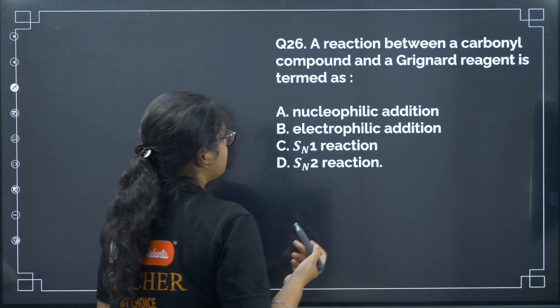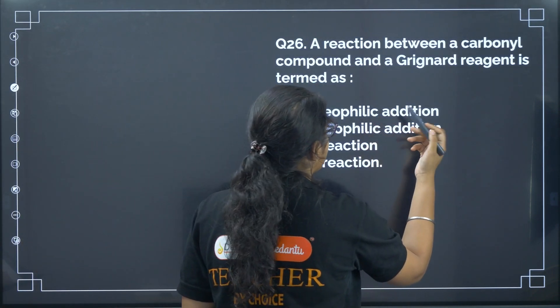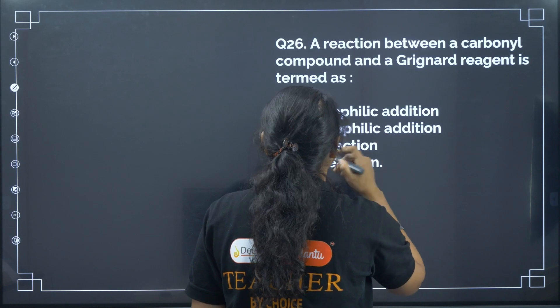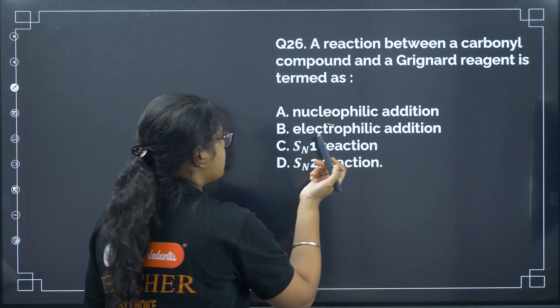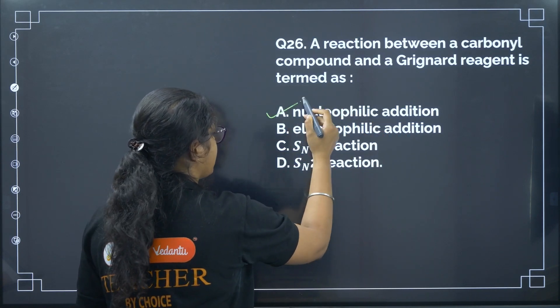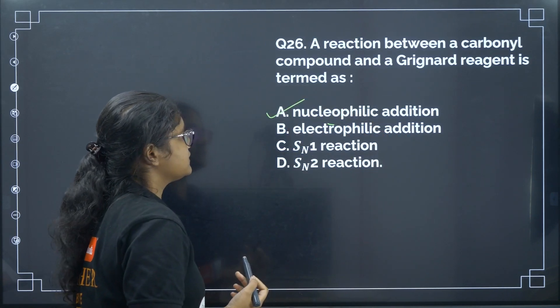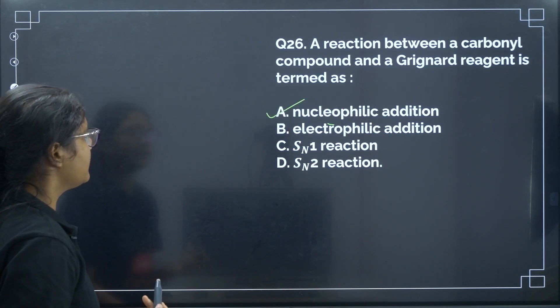Next: a reaction between a carbonyl compound and a Grignard reagent is termed as? This is a nucleophilic addition reaction. Correct answer: option A.